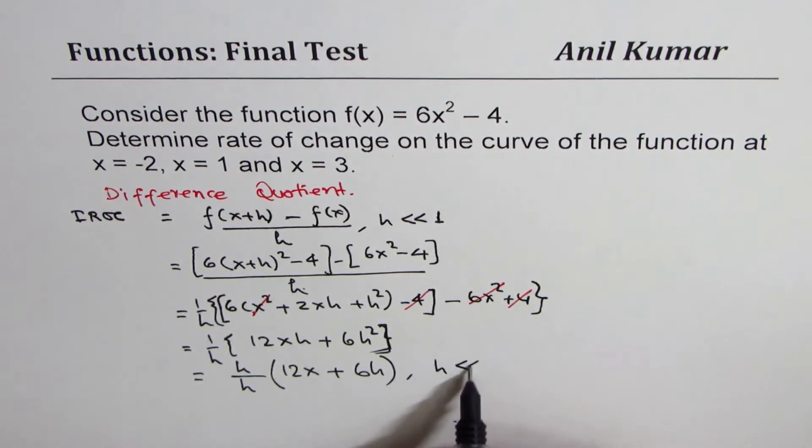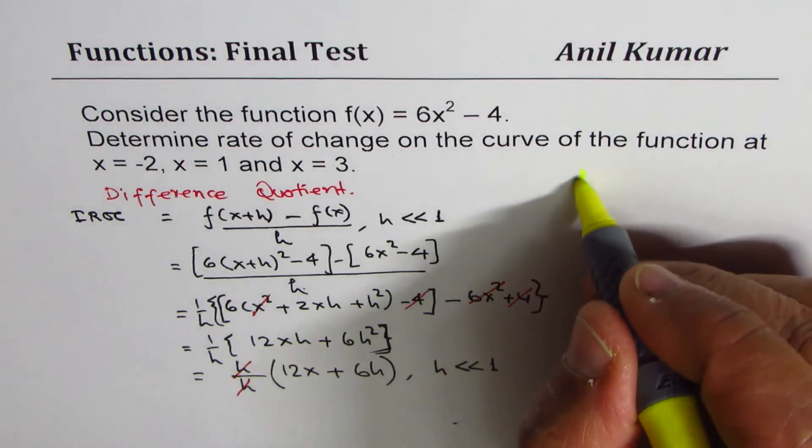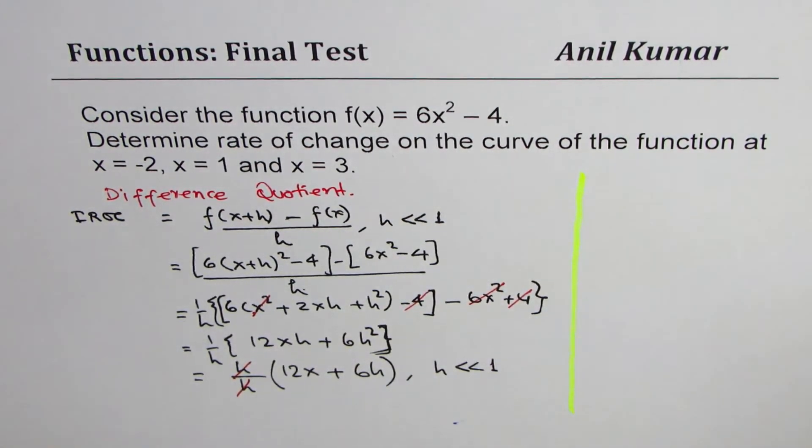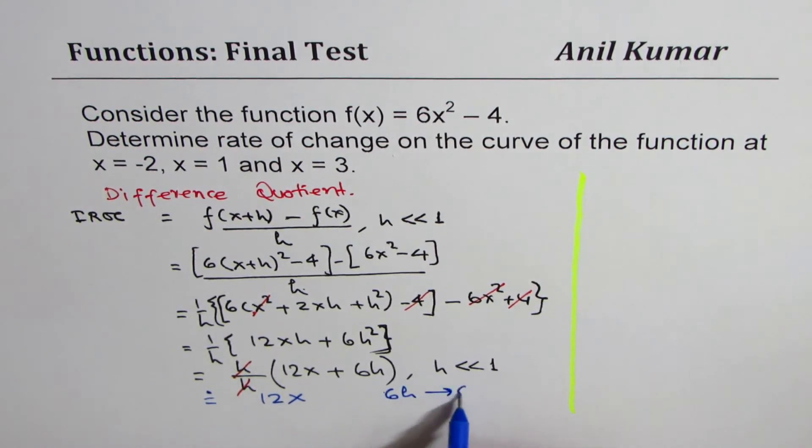As you know, h is very, very small as compared to 1. We can actually write instantaneous rate of change as, we'll write it there, but let me just finally write here the answer, which is 12x. Since 6h approaches 0, it is 12x.